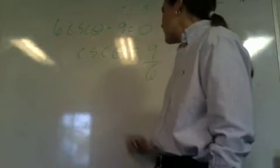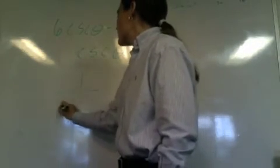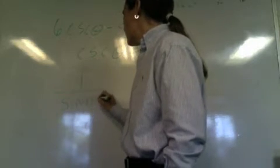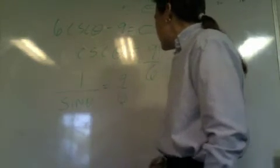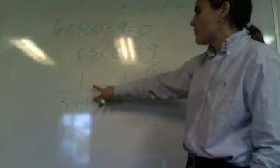What is cosecant of theta? It's the same as what? 1 over the sine of theta equals 9/6. So the inverse of that is sine? Well, yes.